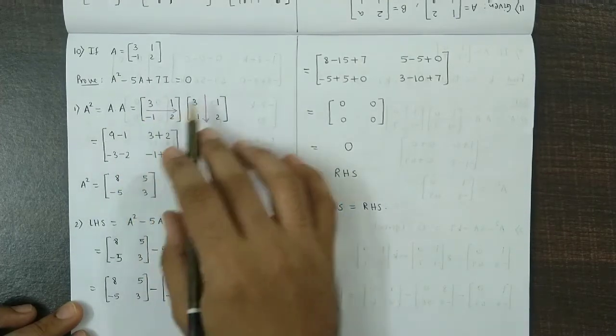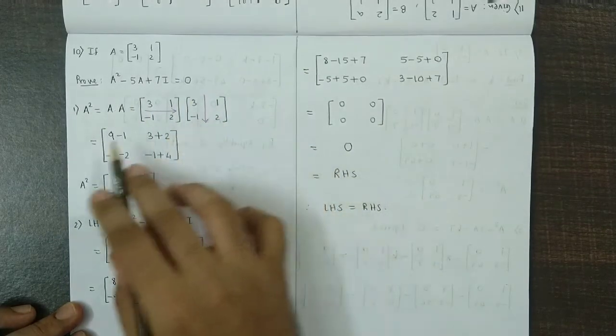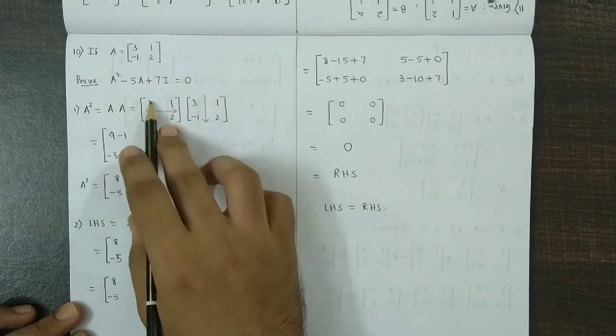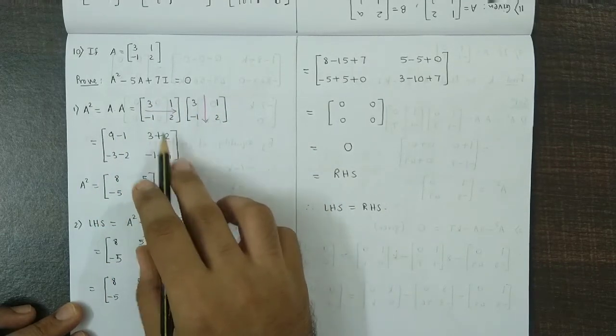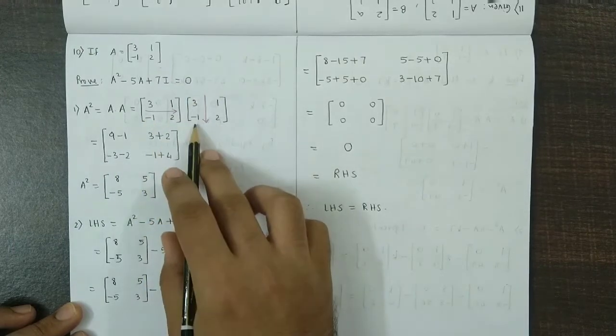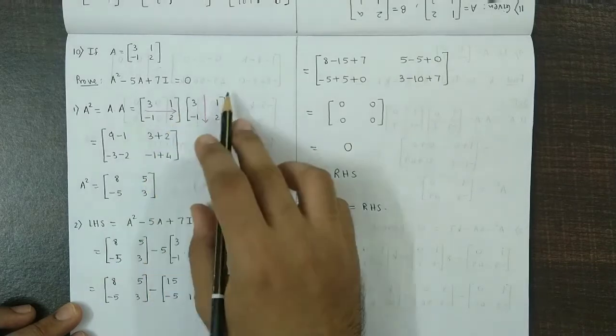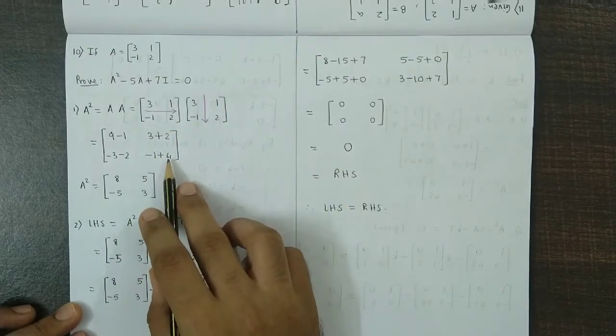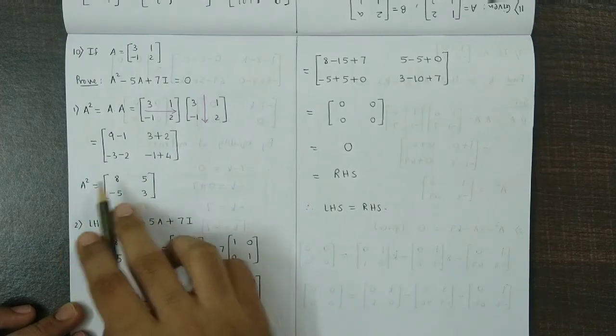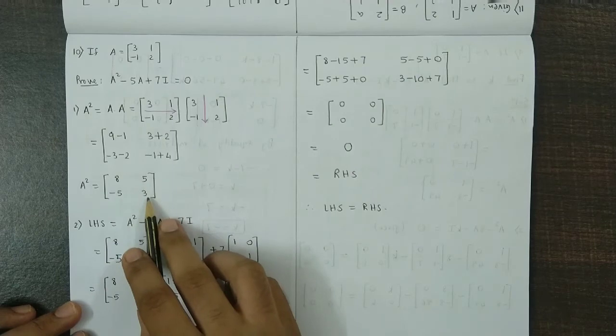Now you multiply the corresponding rows and columns. R1, C1 gives 9 minus 1. R1, C2 gives 3 plus 2. Then R2, C1 will be minus 3 minus 2. R2, C2 will be minus 1 plus 4. So we obtain A square as 8, 5, minus 5 and 3.